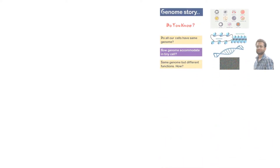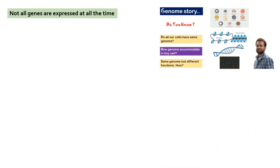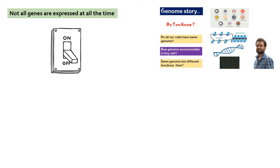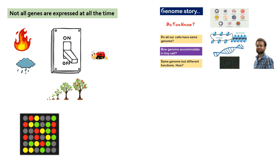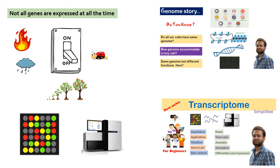If you have watched my genome story video, I have explained that not all genes are expressed at all times. Organisms turn on and off their genes in response to environmental and developmental cues. Expression of one or more genes provides critical biological information such as health status or disease. There are techniques such as microarray, transcriptome sequencing and others that provide information about gene expression. So the three terms I am going to discuss today represent the expressed part of the genome.